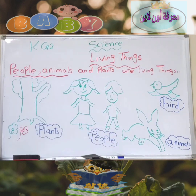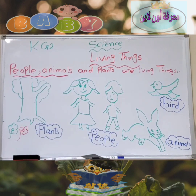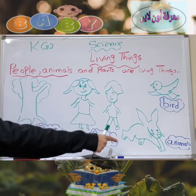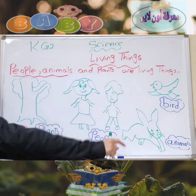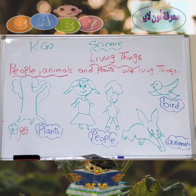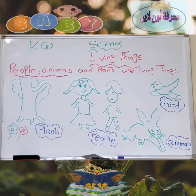Animals. Animals like what? Animals like rabbit. Rabbit is an animal, and animals are living things.